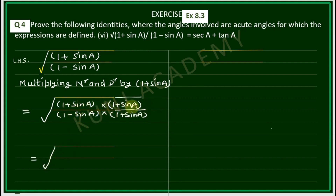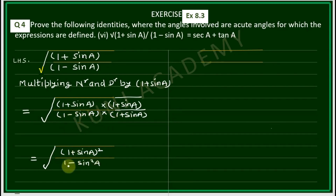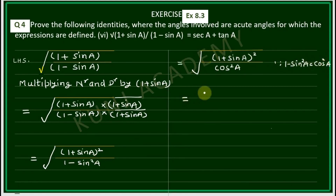The numerator becomes (1 + sinA) into (1 + sinA), which is (1 + sinA) whole square. The denominator becomes (1 - sinA)(1 + sinA). Applying the identity (a - b)(a + b) = a² - b², we get 1² - sin²A = 1 - sin²A = cos²A. Taking square root: (1 + sinA) upon cosA, which separates as 1/cosA + sinA/cosA.